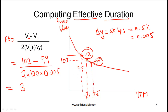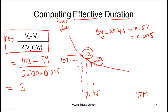What we are effectively saying is that at this point where yield is 8% and bond value is 100, the effective duration is 3, which means a 1% change in yield will have approximately a 3% impact on the bond value. It is extremely important to memorize this formula, understand what every term means, and be able to plug in numbers and calculate effective duration. This is a very high probability question on the exam.